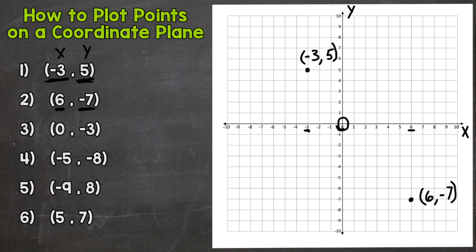So number 3, we have 0, negative 3. So since our x-coordinate is a 0, we do not need to move on our x-axis. So we stay right here at 0 in the center. And our y is a negative 3. So again, this is a negative, so we're going to go down on our y-axis to negative 3.